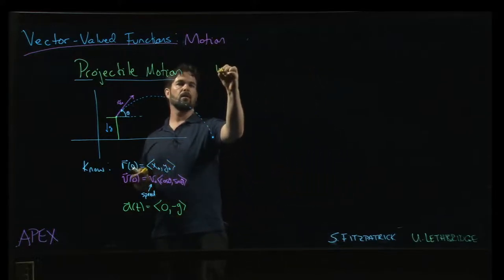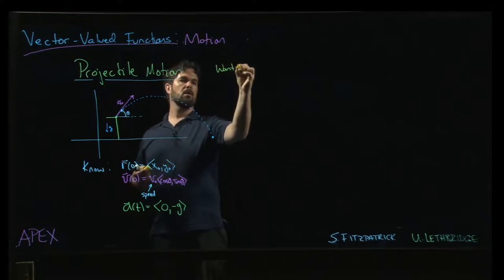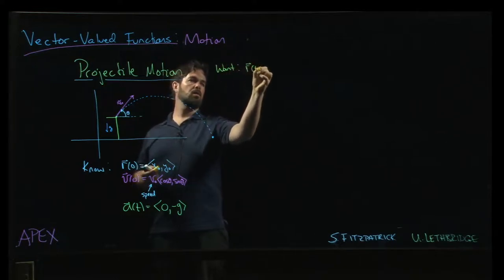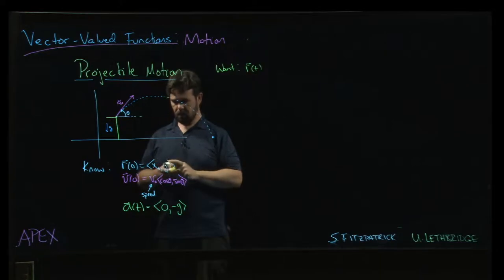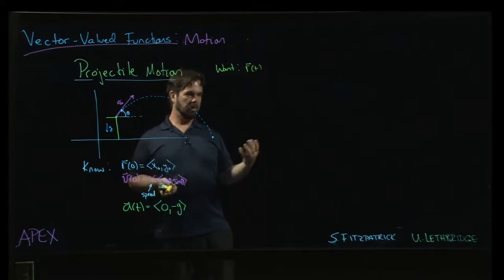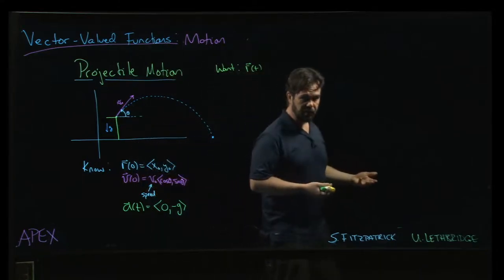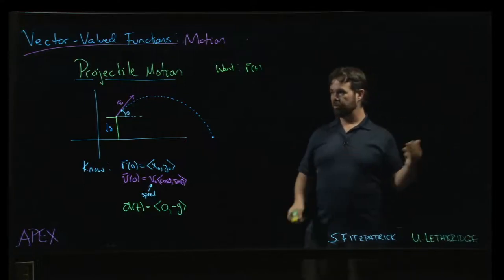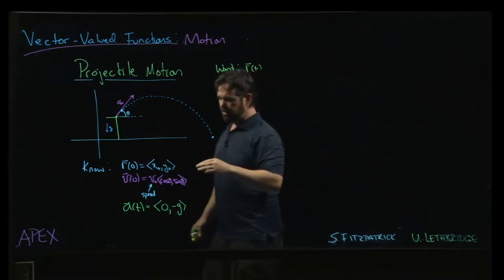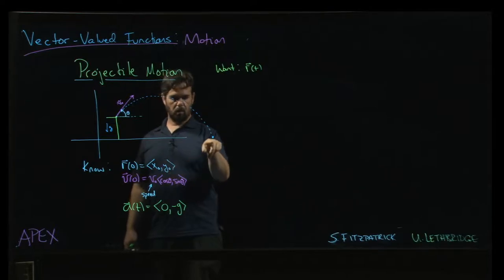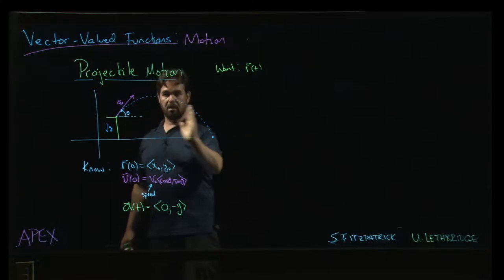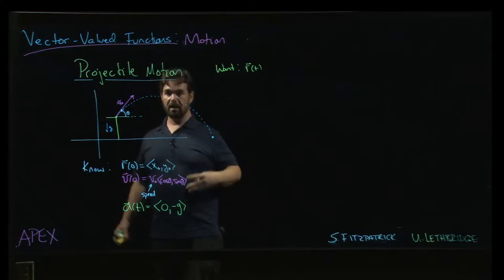Of course, the thing that we want is r of t. And then once we've got r of t, we can figure out things like how far does it go. We can figure out the value of t for which y is equal to 0 - when does it hit the ground - and then put that t value in for the x value and figure out how far it went.